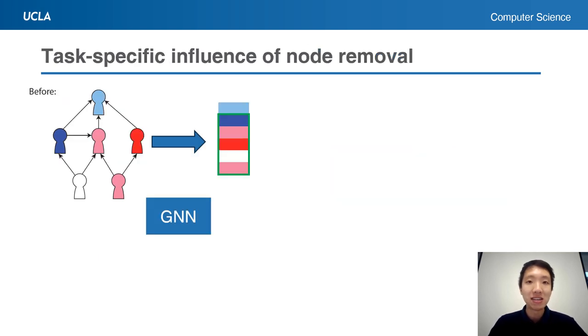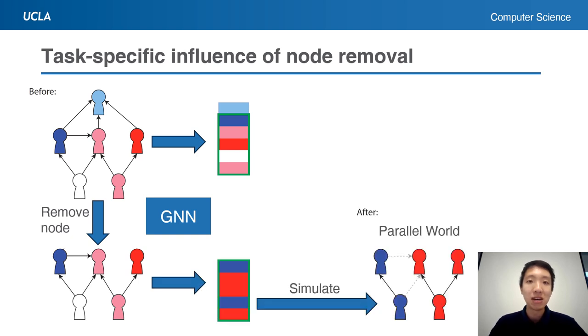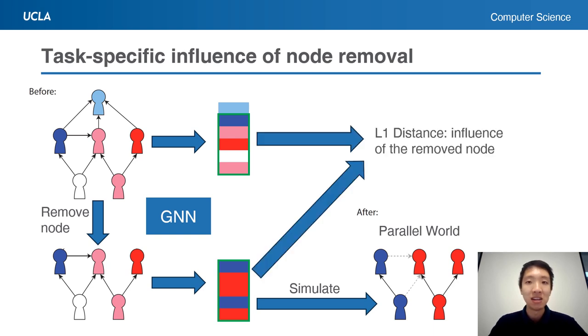We first train a GNN model on the original graph. Then we remove the target node, reapply the GNN to generate the new predictions which simulate the parallel world. Then we measure the L1 distance between the original predictions and the new predictions.